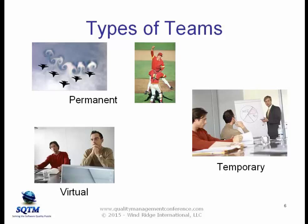The third team is a virtual team. This virtual team can be part of either a permanent team or a temporary team. All it means is not all of the team members are in one location. It's not unusual to have virtual teams where people could be scattered halfway around the world from each other, and they meet with video conferencing or teleconferencing. These are probably the hardest teams to manage because they're not all in one location.